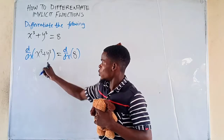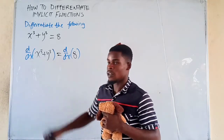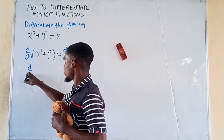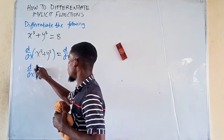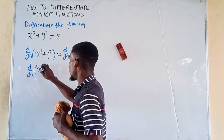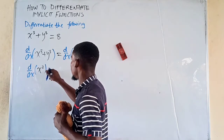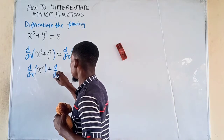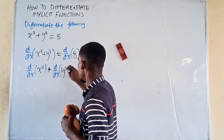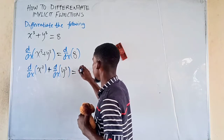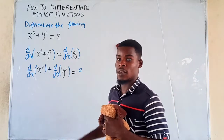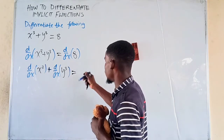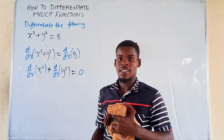Now we are going to split this, since this is a sum of two terms. We are going to differentiate each of the terms. So that would mean we are going to have the derivative with respect to x of the first term, which is x raised to the power of 3, added with the derivative with respect to x of y raised to the power of 3, and we equate it with the derivative of 8 with respect to x, which is just going to be 0, because 8 is just a constant.